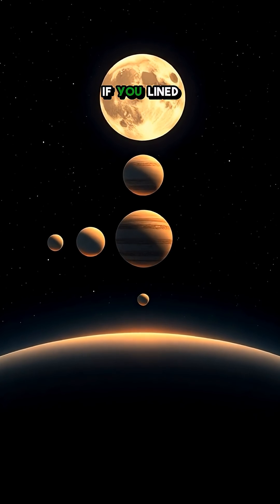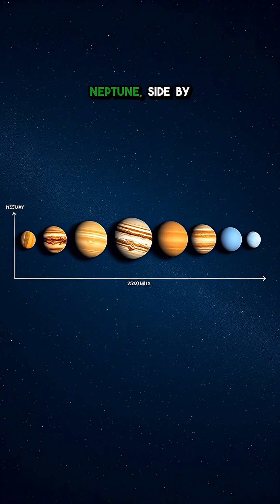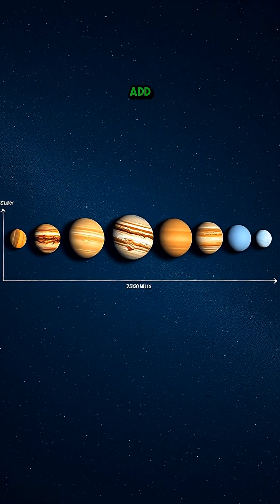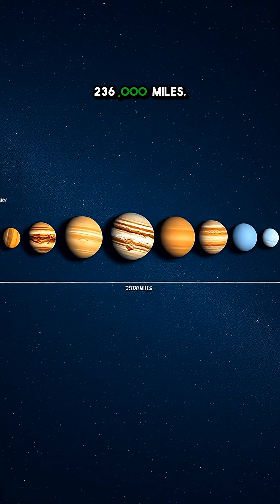But here's the wild part. If you lined up every planet from Mercury to Neptune, side by side, their diameters add up to roughly 236,000 miles.